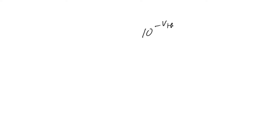We reached an expression for sub-threshold current, which included an exponential factor — actually an exponential in a power of 10: 10 to the power of minus V_threshold over S. S is called the sub-threshold swing, and it is equal to 60 eta millivolts at room temperature. S represents the amount of voltage necessary to swing the leakage current — the sub-threshold current specifically — by a decade.